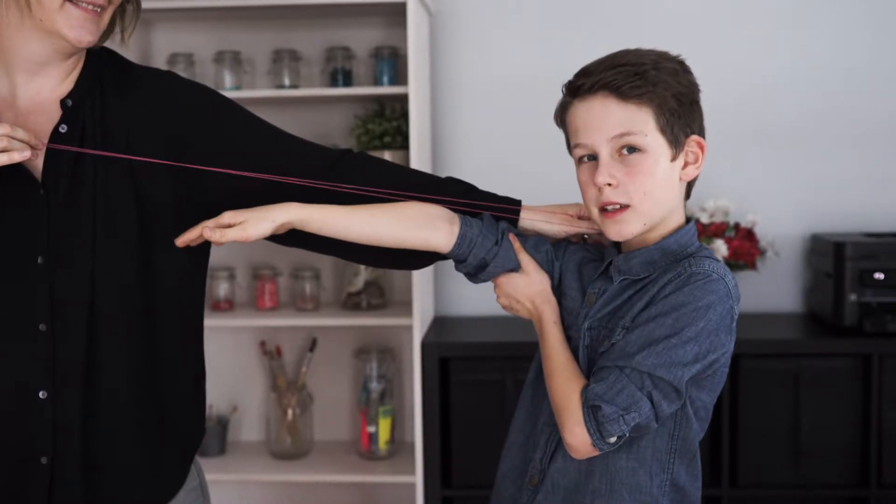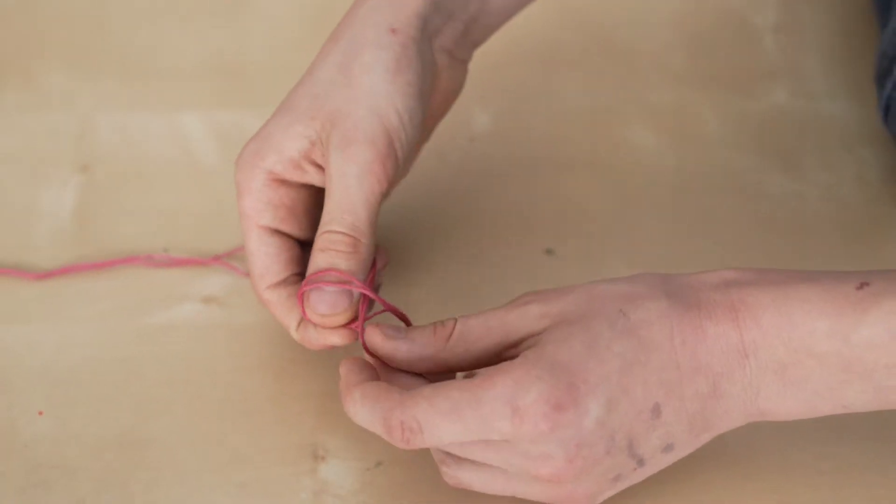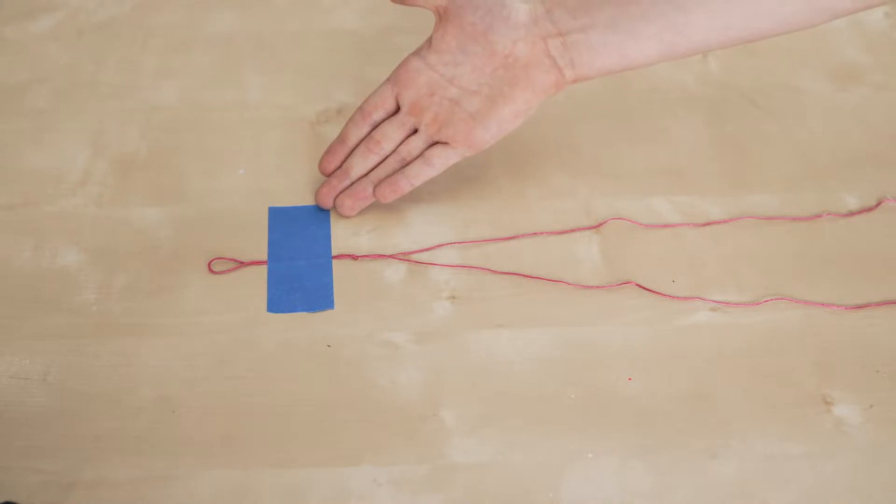Cut a length of embroidery floss. When folded, it is double the size of your arm. Loop a knot at the part that is folded. We tape the string down to the table to hold it steady.